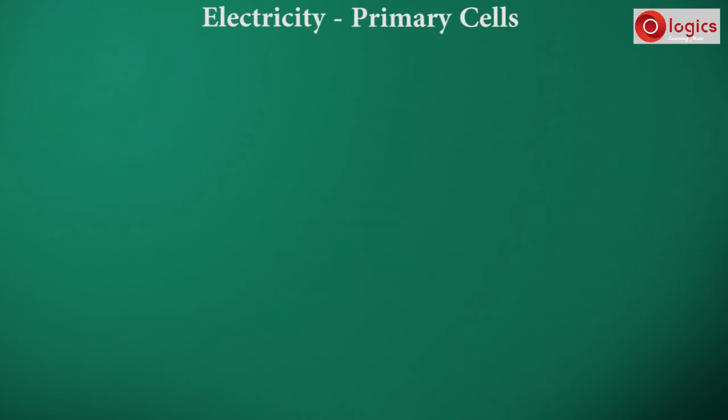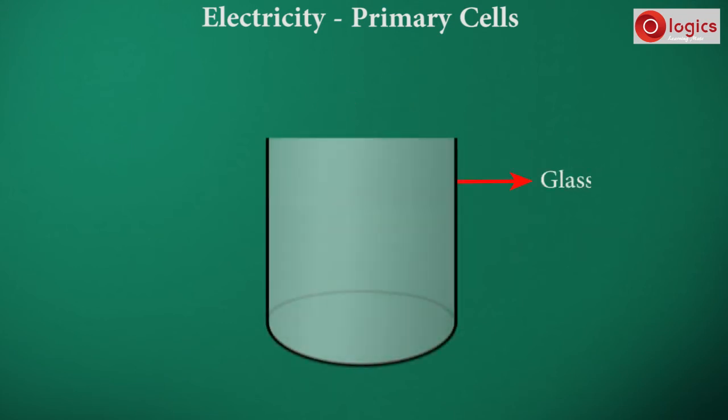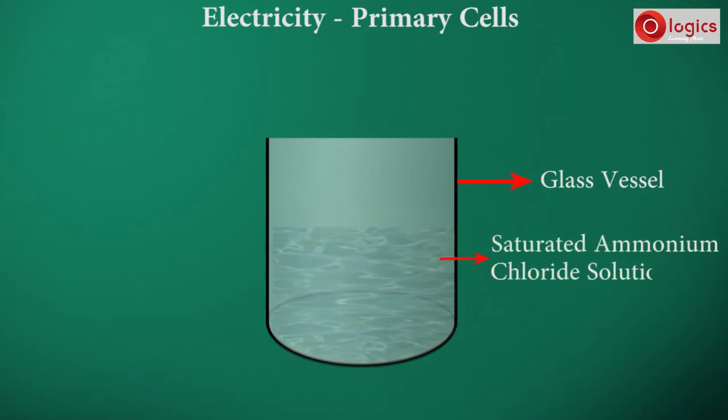It consists of a cylindrical glass vessel. It is half filled with saturated ammonium chloride solution. Into the ammonium chloride solution, an amalgamated zinc rod with a brass terminal and a Leclanché pot are placed.